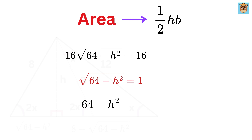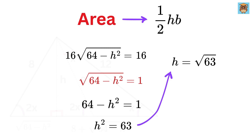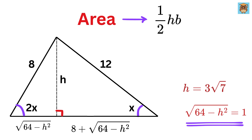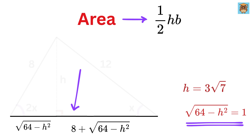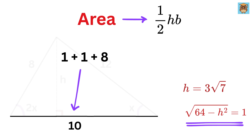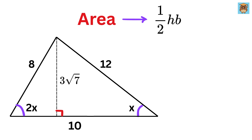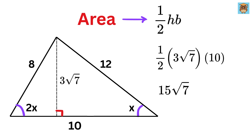Dividing both sides by 16, we get the square root of 64 minus h squared equals 1. Squaring both sides: 64 minus h squared equals 1, and thus h squared equals 63. So h equals the square root of 63, which is 3 root 7. Using this expression, the base of this triangle will be equal to 1 plus 1 plus 8, or the base equals 10. So the area of this triangle equals 10 times 3 root 7 over 2, or 15 root 7.